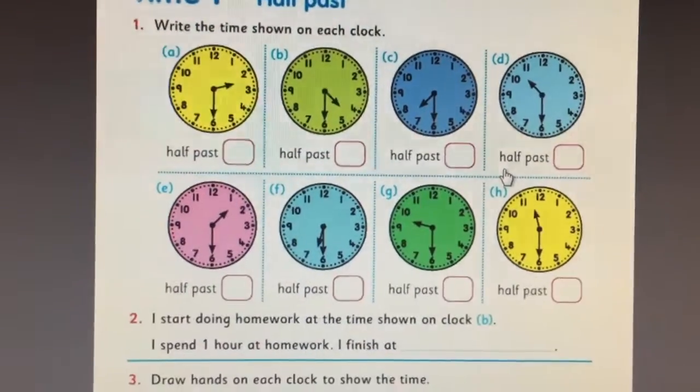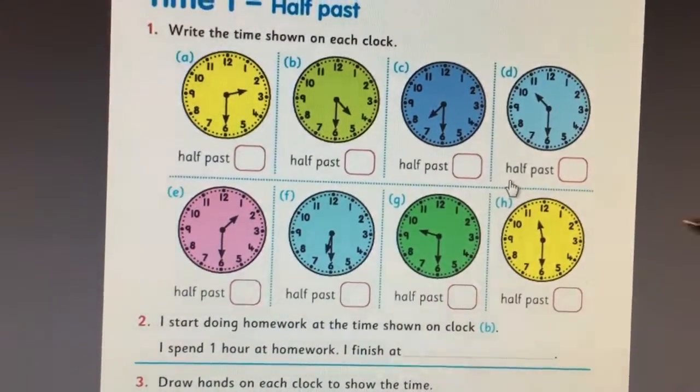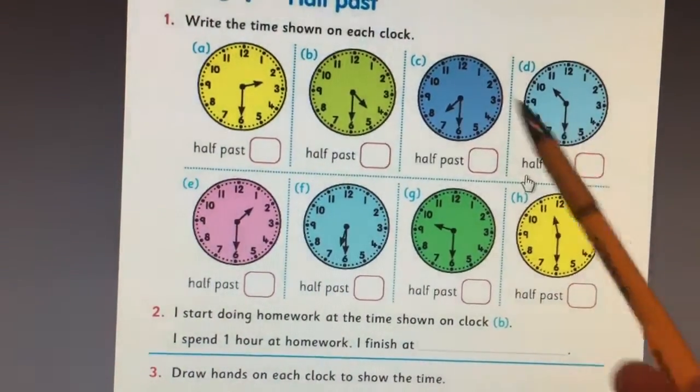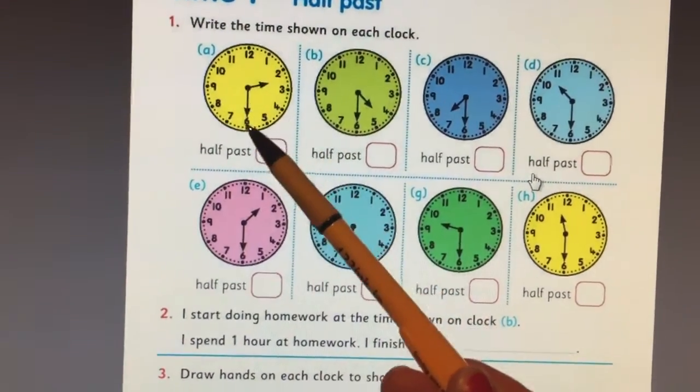You just have to figure out what time it is. I think the first part is fine because most of them are half past, they're all half past because the big hand is pointing to six.